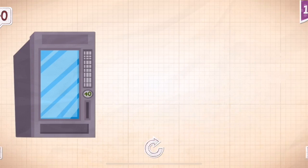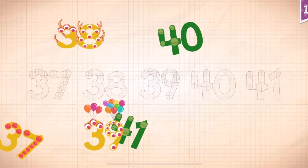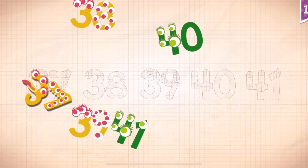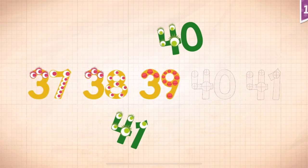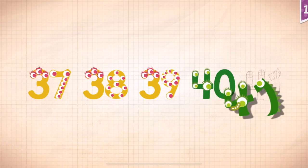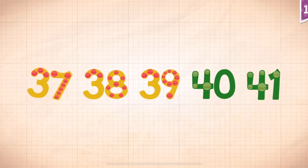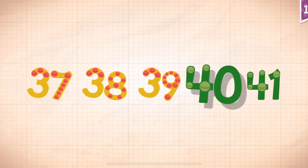Rocky had to put 40 coins in the vending machine to get what he wanted. 37, 38, 39, 40, 41. 37, 38, 39, 40, 41.